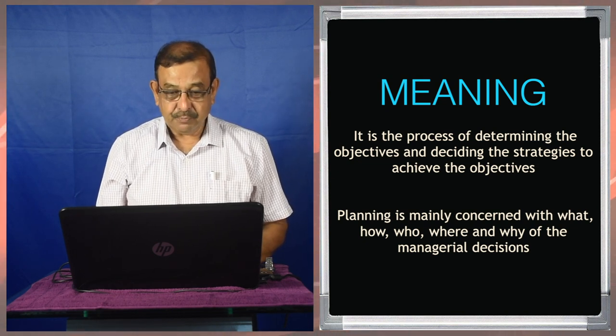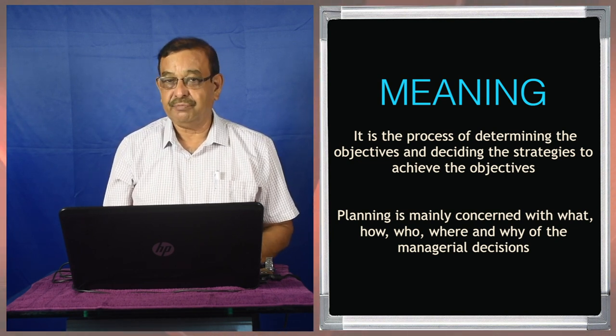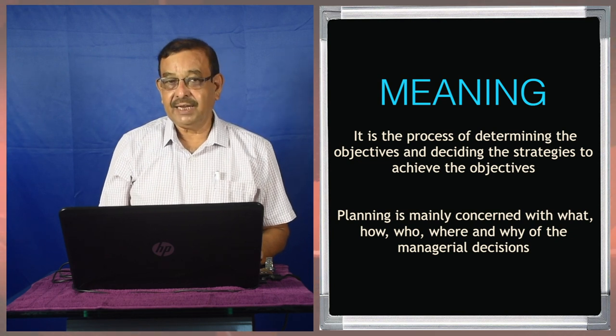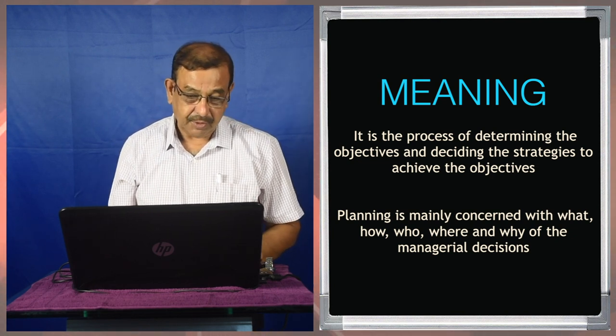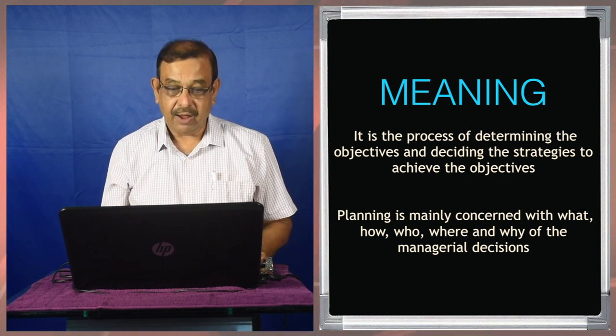Planning is a process of determining the objectives and deciding the strategies to achieve those objectives. So it is basically goal oriented. We have to be concerned about the goals and objectives. Planning is mainly concerned with: what is to be done, how that is to be done, who will do that, where that will be done, when that will be done, and most importantly, why this is required.